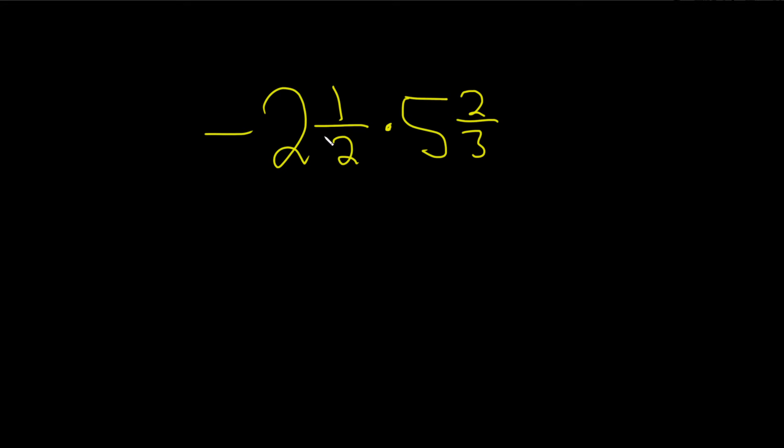In this problem, we have a negative mixed number times a positive mixed number, and we're going to multiply them. So before we do the multiplication, we're going to convert these into fractions.